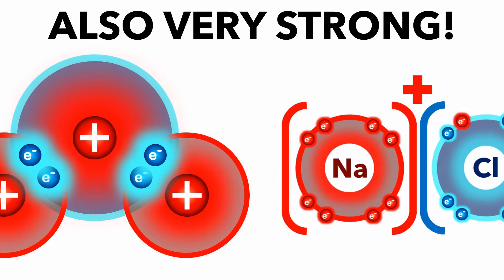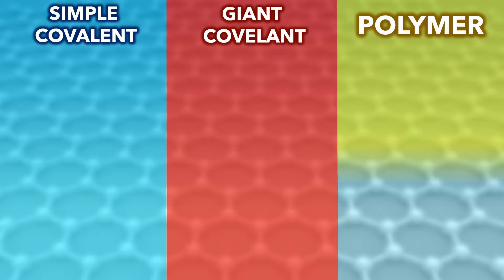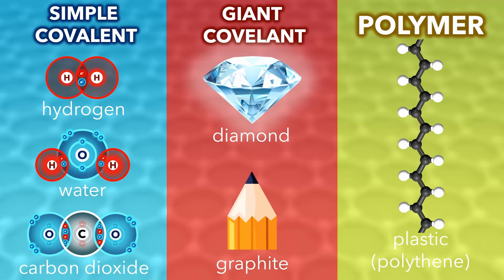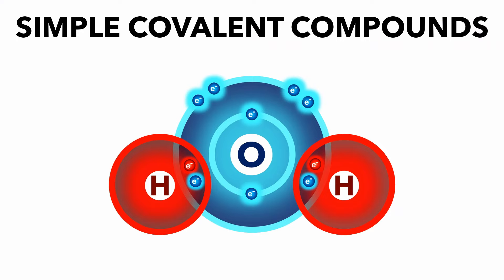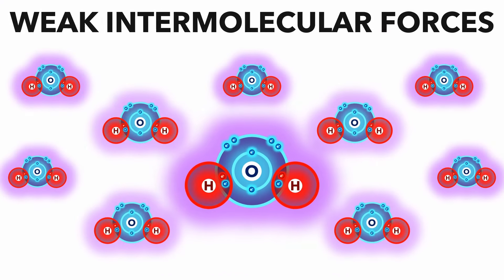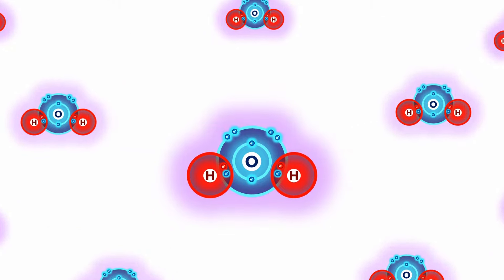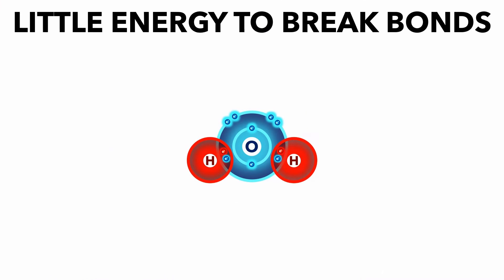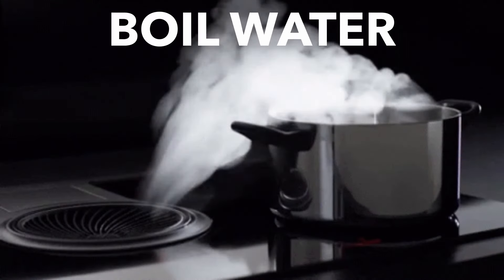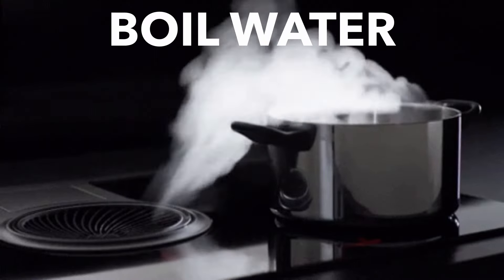And like ionic bonds, they are very strong. Water is one of three kinds of covalent compound, called a simple covalent compound. Although covalent bonds are strong, the forces between the small molecules are weak, so it takes little energy to break these weak intermolecular forces, meaning that water and other simple covalent compounds have very low boiling points.